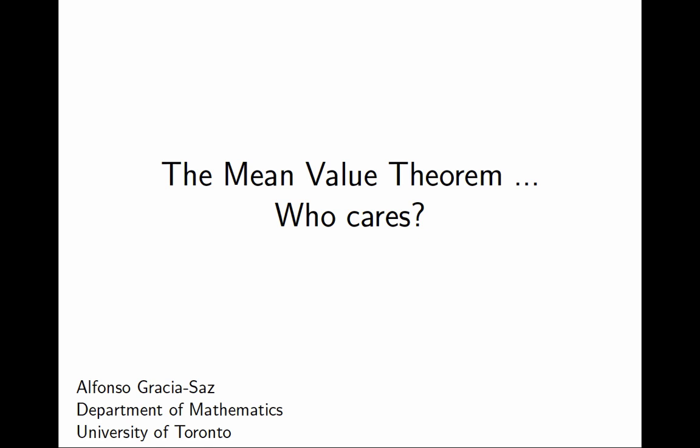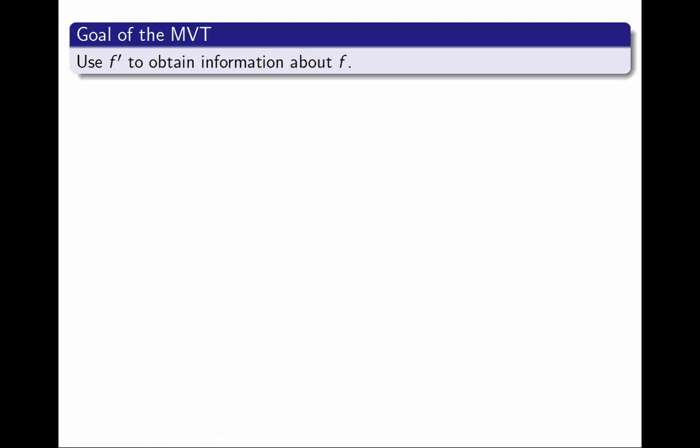In this video, I want to try to explain why this theorem, despite its appearances, is very important. The goal of the mean value theorem is to help us obtain information about a function using something about its derivative. So when we know something about a derivative, what can we say about the function?